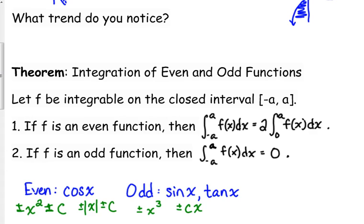is equivalent to 2 times the integral from 0 to a, or you could also do negative a to 0, that would be the same difference. If it's an odd function, then the integral from negative a to a is 0. You can't split that one up. You can just automatically say that it's 0.